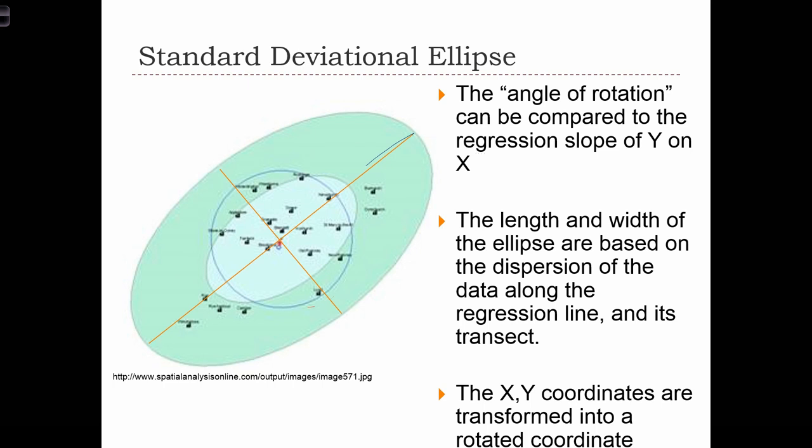And in the plot, I'm showing you with the blue circle the standard distance of the point distribution. And in the green ovals or the green ellipses, I'm showing you the standard deviational ellipse.